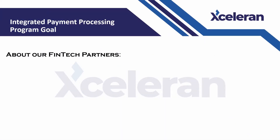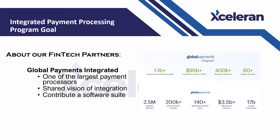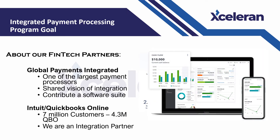Just a quick reminder in case you didn't watch the overview video: our partners in payment processing are Global Payments Integrated, GPI, and Intuit, maker of QuickBooks Online, to which we integrate. GPI is one of, if not the largest, payment processor with over 400,000 merchants, and Intuit is equally positioned in their field. This provides our program with stability and should give you great comfort when dealing with something as important as your money.